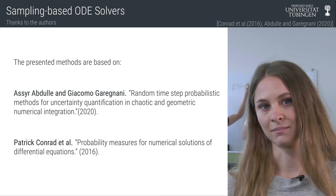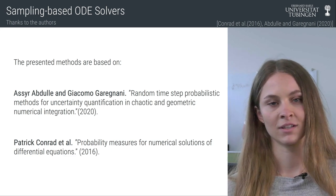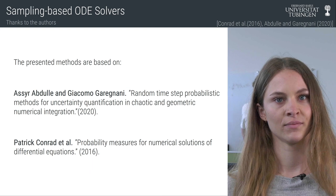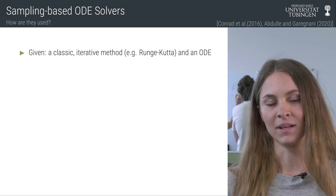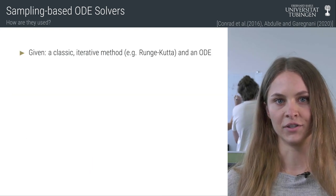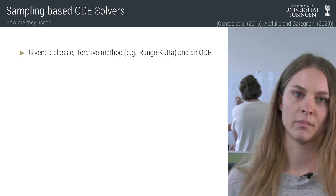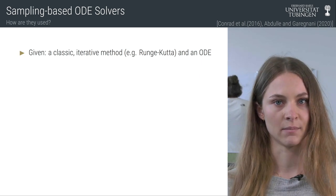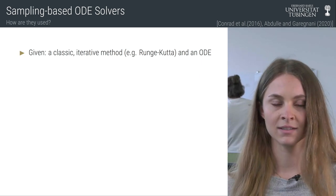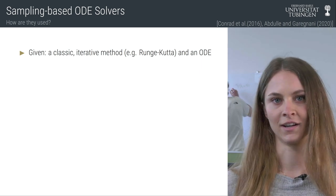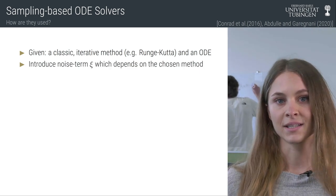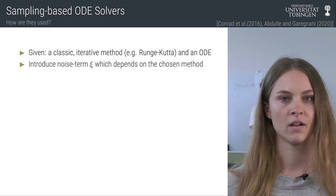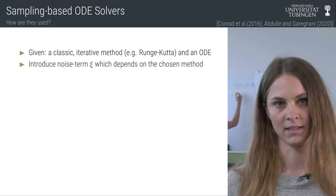Credits to the people who came up with these methods: Giacomo Gardignani, Asya Abdulle, and Patrick Conrad. Sampling-based ODE solvers are probabilistic ODE solvers that are based on classic iterative methods — for example, Runge-Kutta methods — and they take an ODE into account. By introducing some noise term Xi, the deterministic solver becomes non-deterministic and probabilistic.